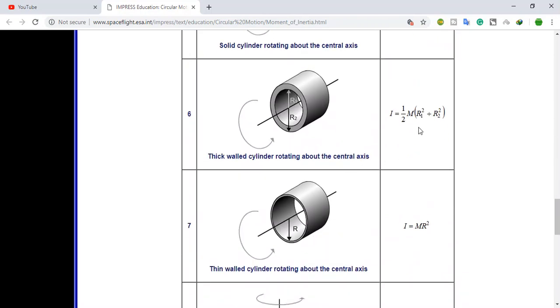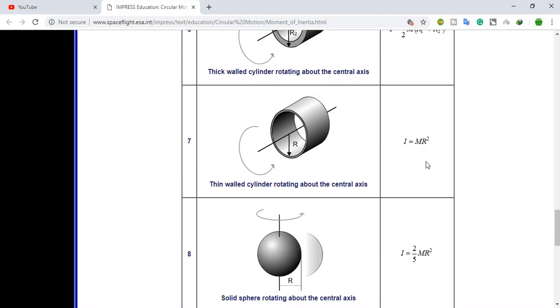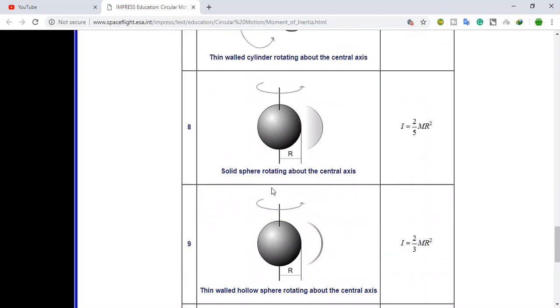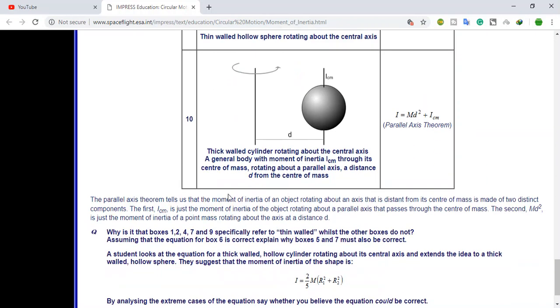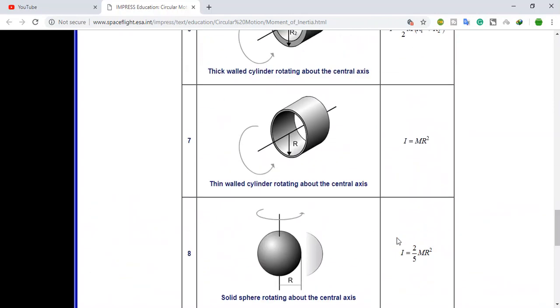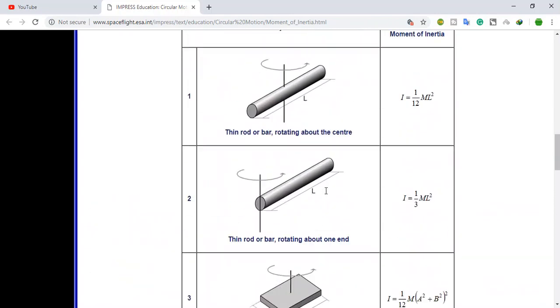For thin rectangular, I equals m square by 3. For solid cylinder, I equals mr square by 2. For thick wall cylinder, m by 2 into r1 square plus r2 square. For thin wall cylinder, I equals mr square. For solid sphere rotating about the central axis, I equals 2 by 5 mr square. For thin wall hollow sphere rotating about the central axis, I equals 2 by 3 mr square. Okay, so these are all the formulas for different systems, different bodies, different moments of inertia. Just remember all those formulas.